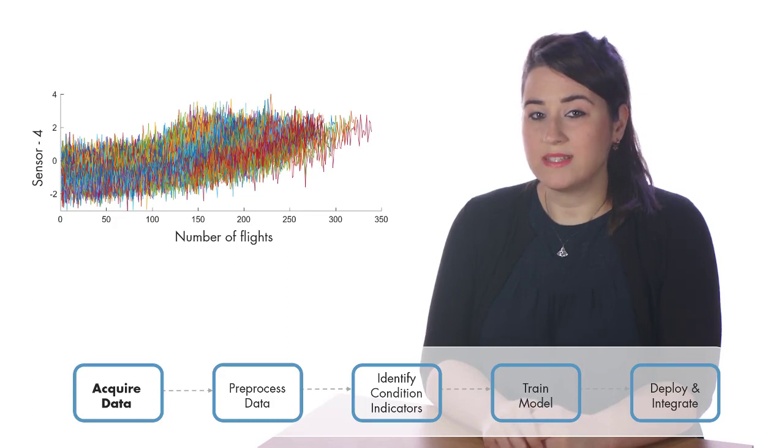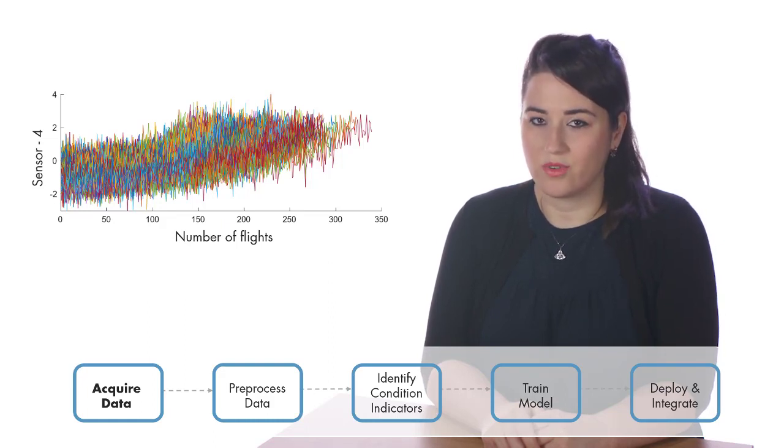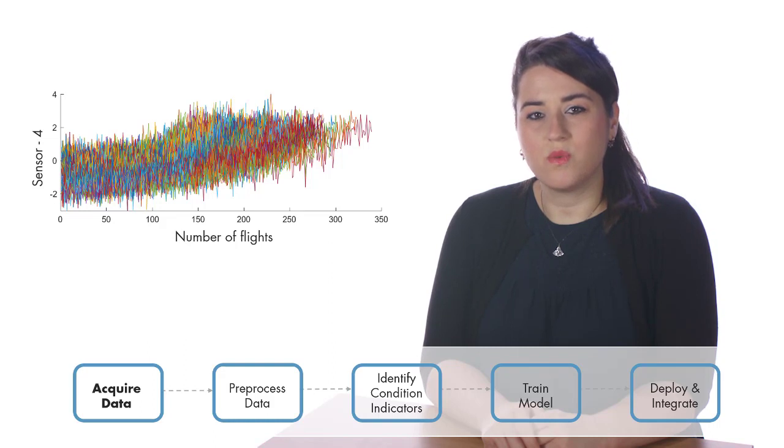Here is how one of these sensor measurements looks like for all the engines. On the plot, the X axis shows the number of cycles or flights, whereas the Y values represent the average sensor values at each flight.